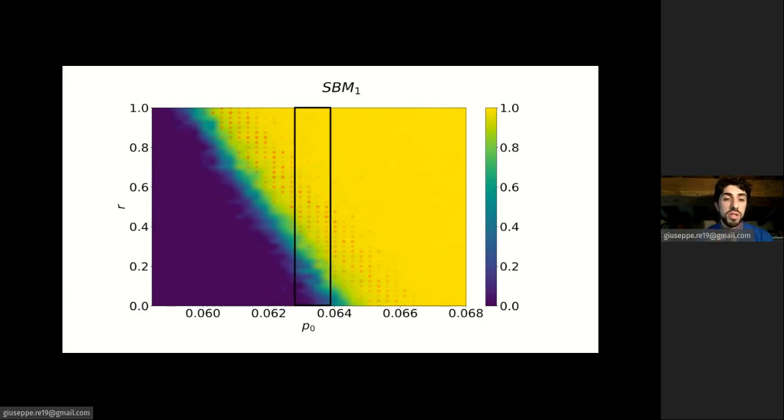If we focus on the specific regime of moderate virality, we can see the role of reinfections. If r is equal to zero, so if we don't have reinfections, we also don't have large cascades. While if r is large enough, we can observe large cascades which are also recurrent, because we see the red stars.